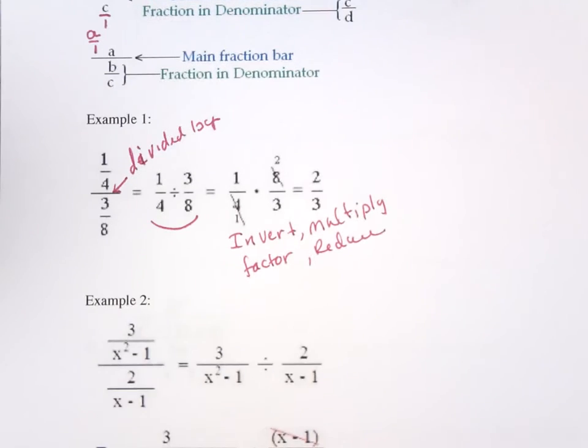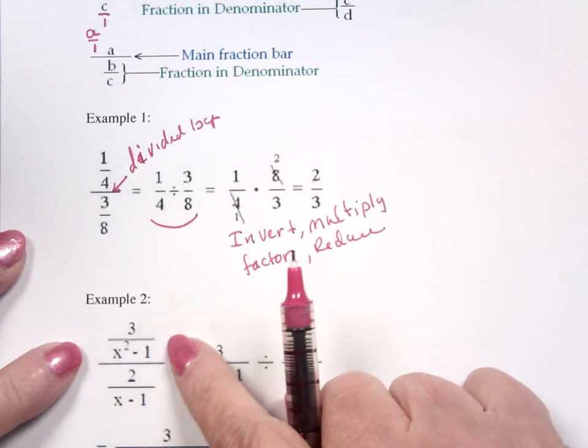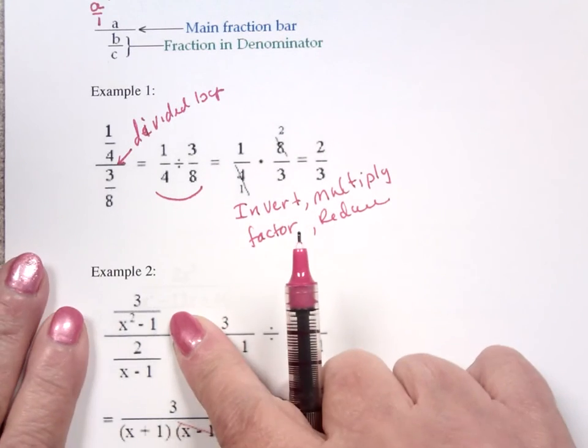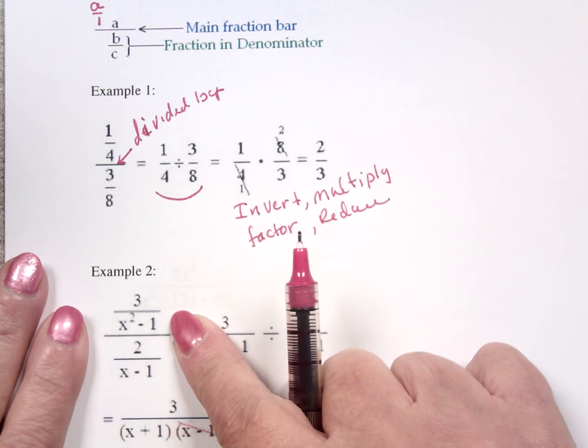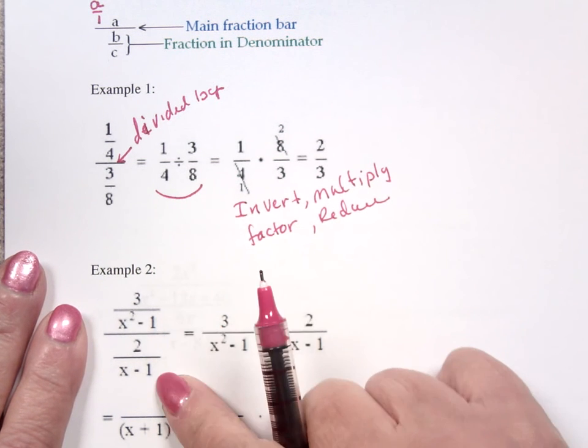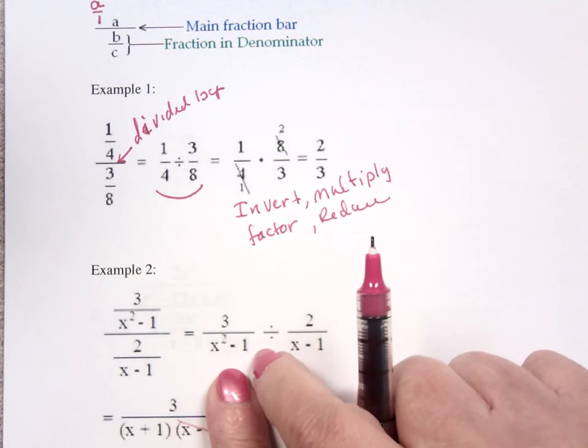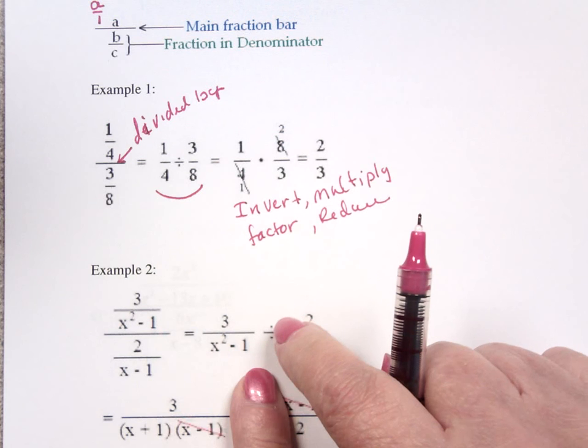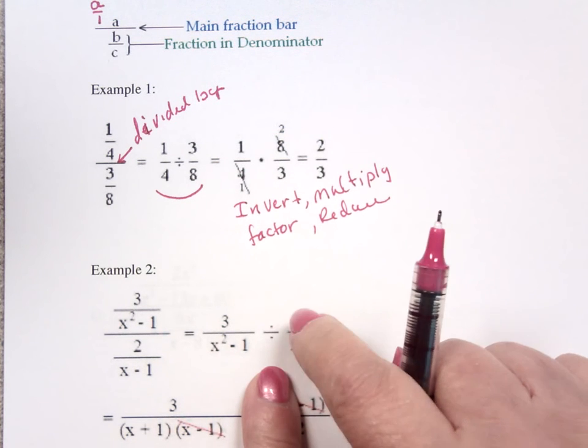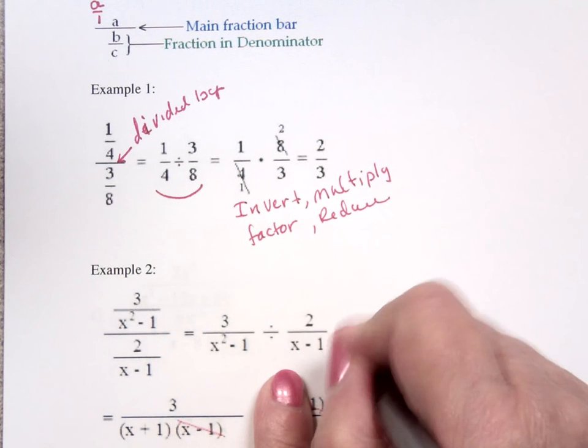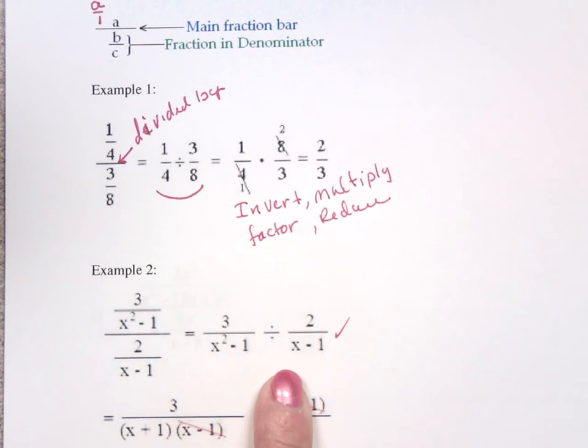So when I look at this particular example, which is a complex fraction, which is 3 over x squared minus 1 divided by 2 over x minus 1. This is equal to 3 divided by x squared minus 1 divided by 2 over x minus 1. This is the way we saw this in 6.2, I do believe. It's a 6.2 problem.